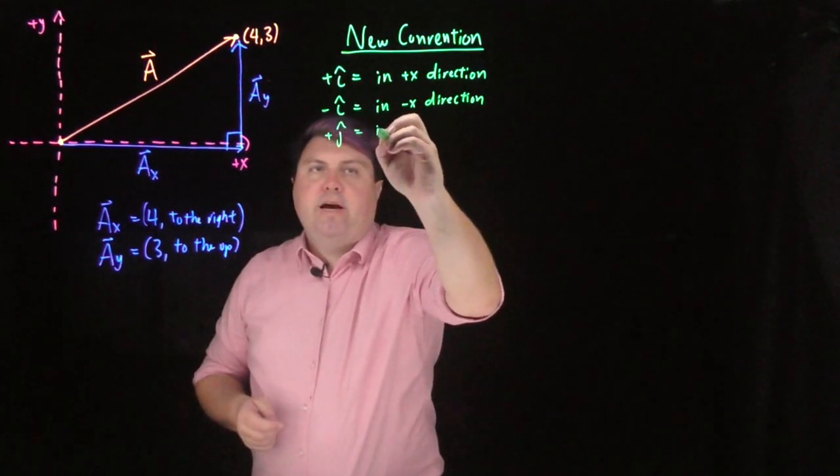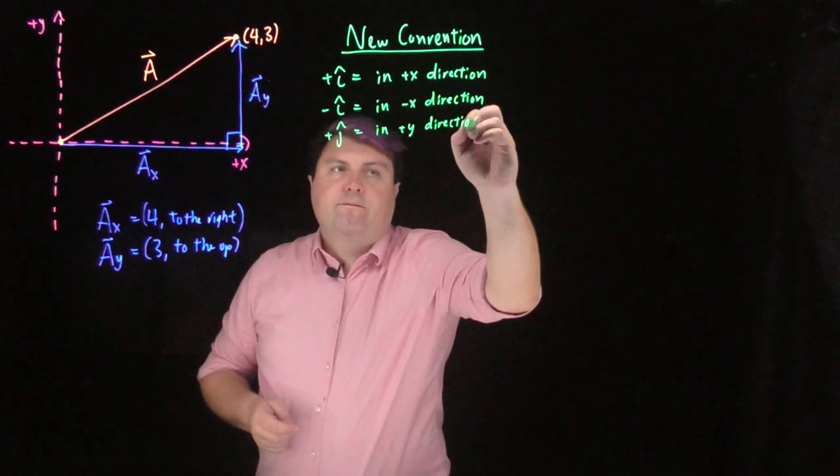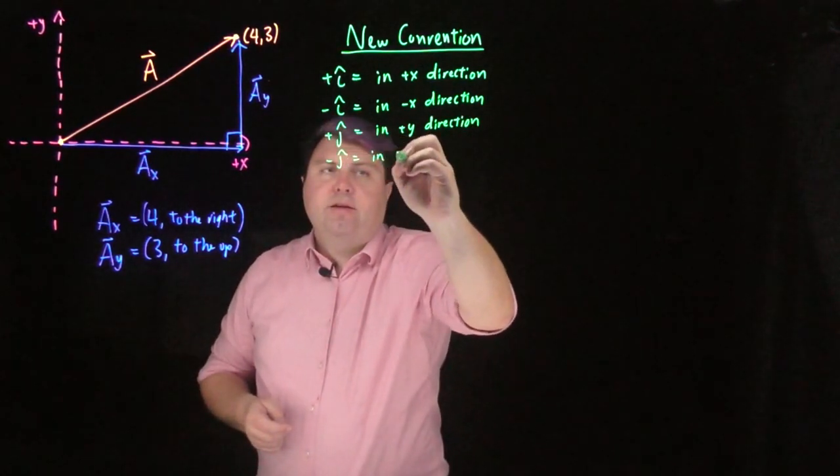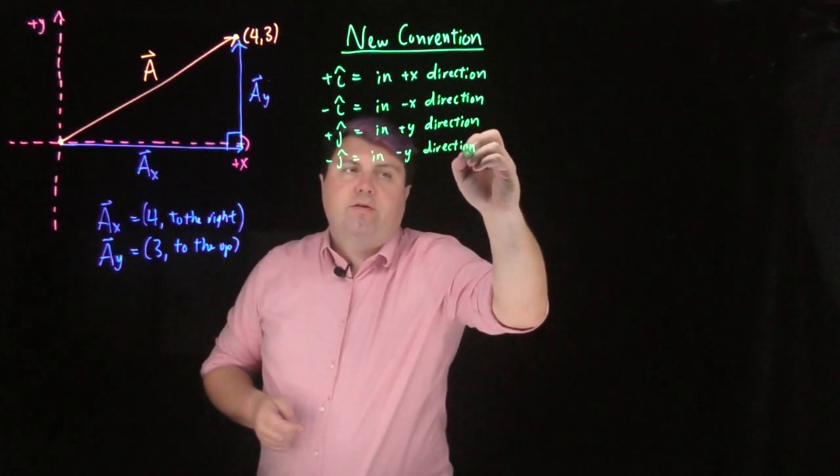Plus j-hat in the positive y direction, and minus j-hat is in the negative y direction.